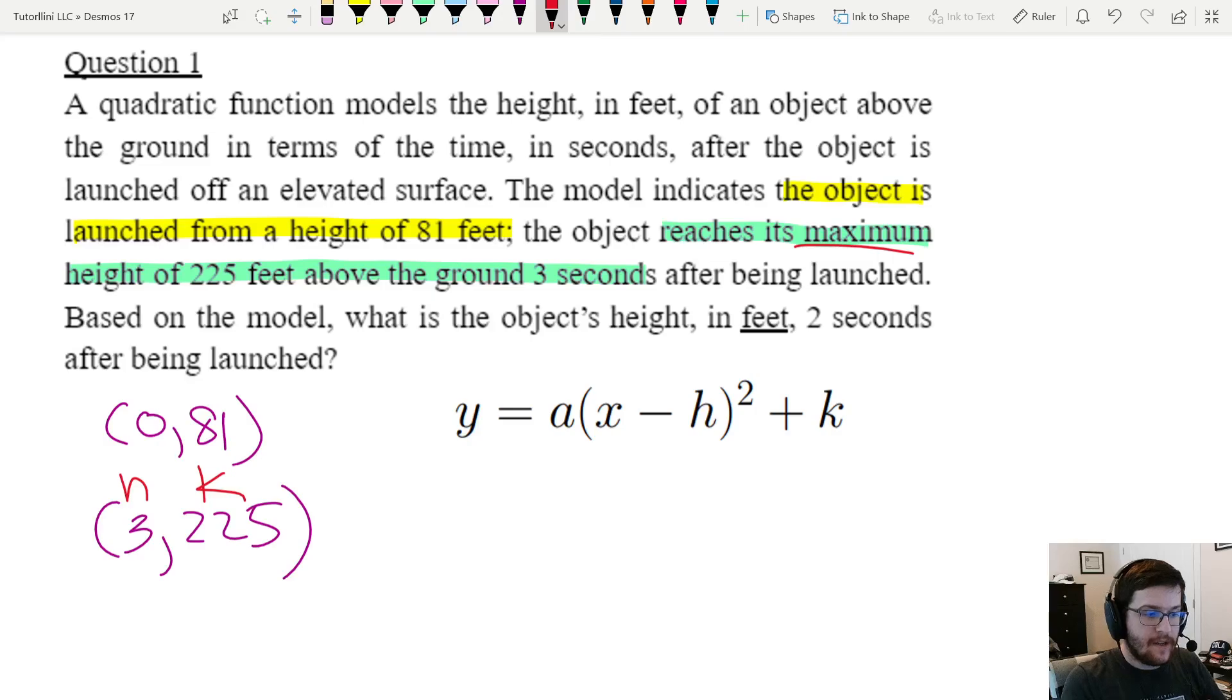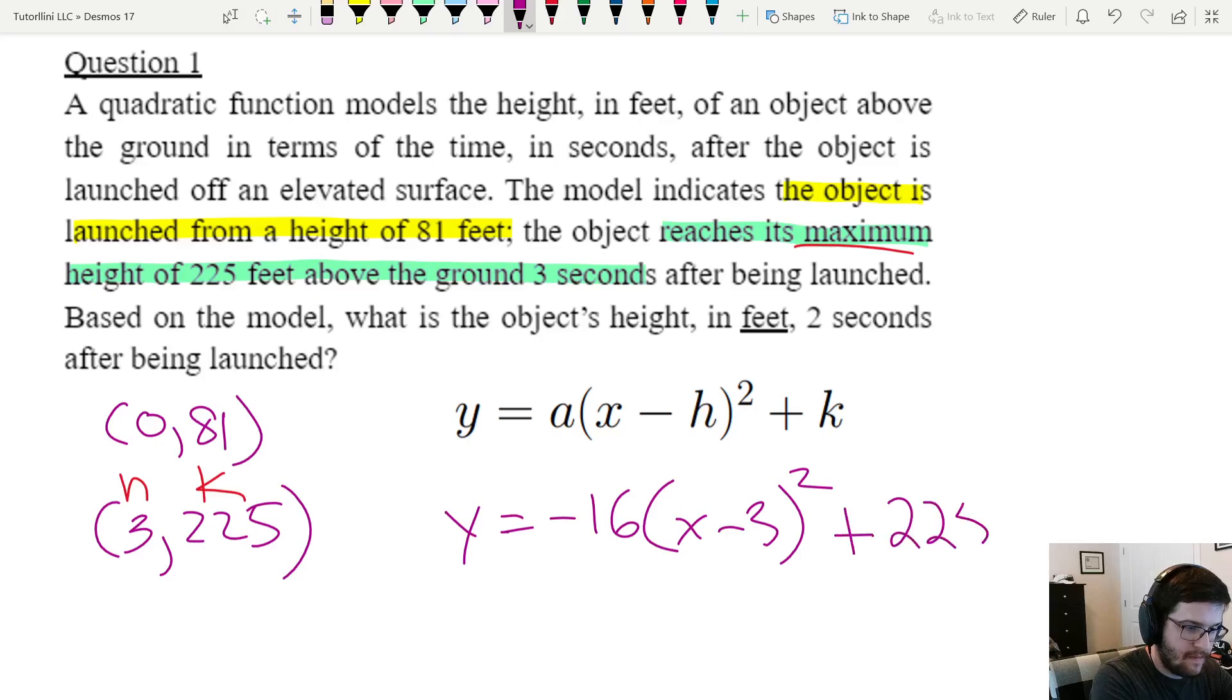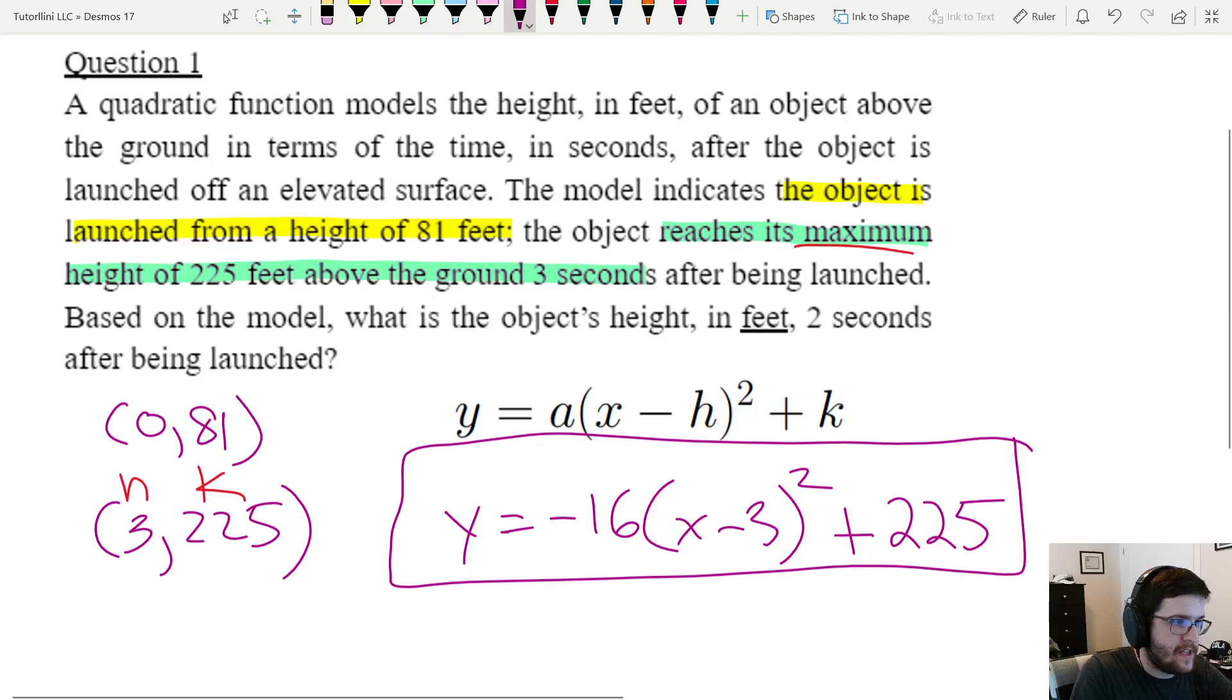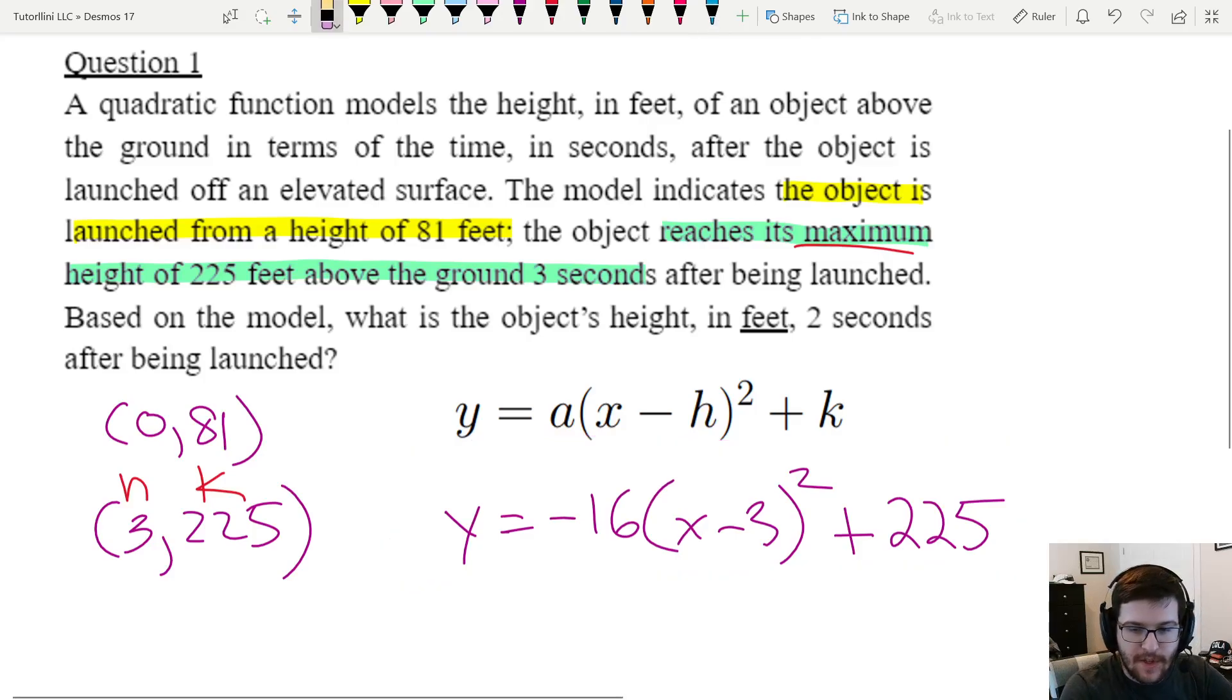What you would then do is, and again I've gone over problems like this before, you would plug the h and the k in, and you would then plug in the 0 comma 81 to find a. You can do that on your own. You should come up with this equation, negative 16(x minus 3) squared plus 225. And of course, going into the exam, you want to make sure you know vertex form by heart, which I wrote on the board here.